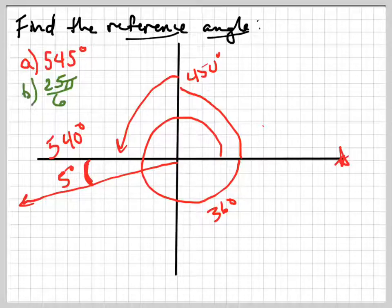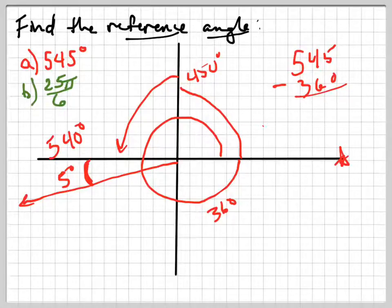So wait, how did he do it? Here's another way your teacher might do it. Your teacher might take 545 and subtract 360. The reason he's doing that is because he's going around the circle once and seeing what he has left over. And left over, he would have 185 left over.